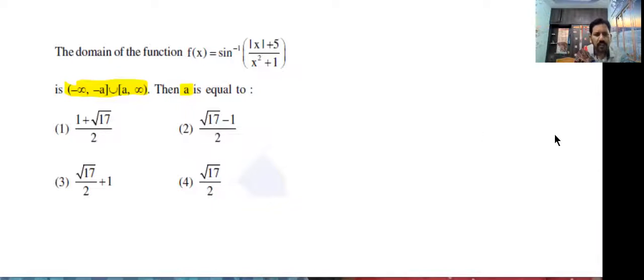See this? First question, the domain of the function f of x is equal to sin inverse of mod x plus phi by x square plus one is minus infinite comma minus c union a comma infinite. Then find a value.